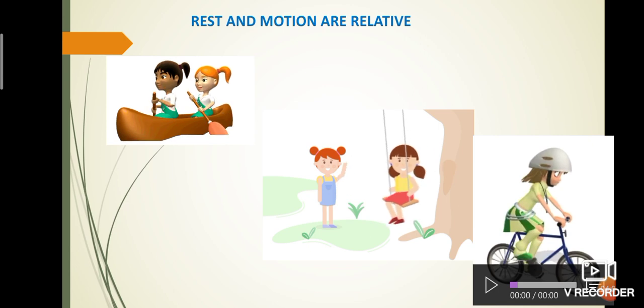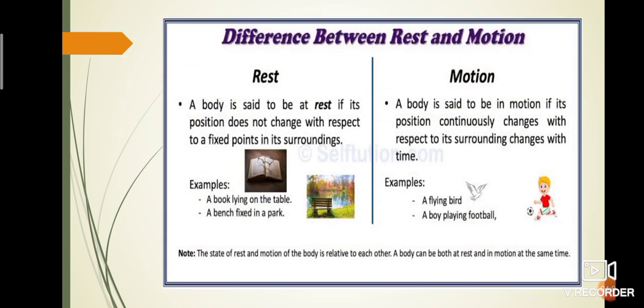Now, you tell me the difference between rest and motion. Rest is if its position does not change with respect to a particular place. Example: book on the table, bench in a park. Motion is changing of position with respect to time. Example: a flying bird, boy playing football.